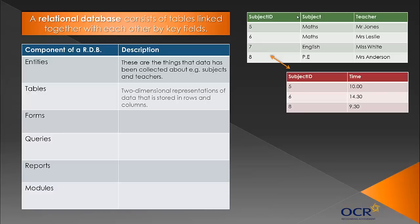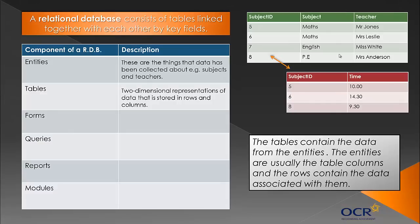To define a table - it's slightly harder than maybe you think because it's just quite a simple word. A table is a two-dimensional representation of data that's stored in rows and columns. The OCR specification asks you to understand the relationship between entities and tables. What I've said is the tables contain the data from the entities. Usually the column headings are the entities and the rows contain the data associated with them. That's what I assume they mean by the relationship.